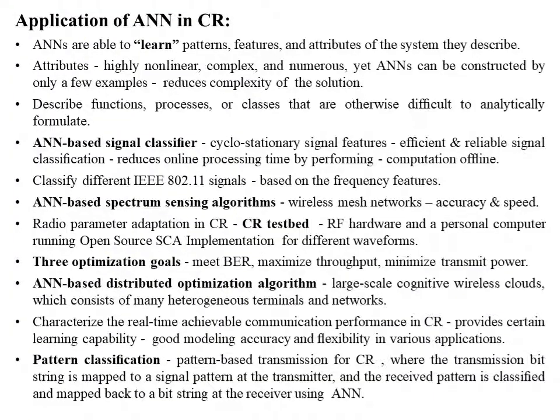First, we will look into the application of artificial neural networks in cognitive radio. Because of their ability to dynamically adapt and be trained at any time, artificial neural networks are able to learn patterns, features, and attributes of the system they describe. The term 'learn' refers to the fact that the neurons are stored in computer memory, the outputs of which can systematically be adjusted to yield a new result for a new situation and remember the results. The attributes can be highly non-linear, complex, and numerous. Yet, artificial neural networks can be constructed from only a few examples, thus reducing the complexity of the solution.